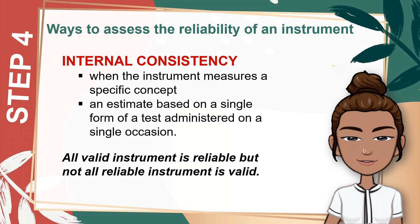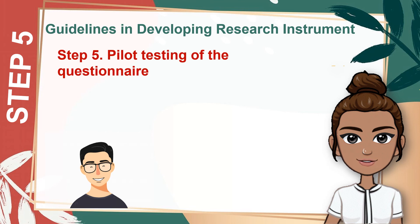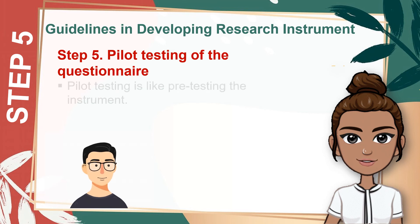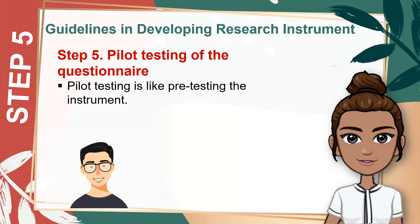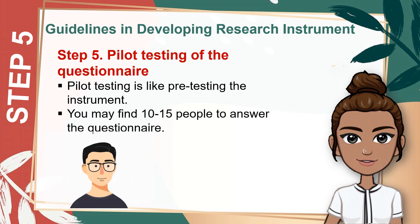To understand this: if you have flu and use a thermometer to measure your temperature, the thermometer gives a reliable result, but not always valid — because if the thermometer is not calibrated accurately, the result might be two degrees lower than its true value. Step 5: Pilot testing of the questionnaire. Once you have assessed the validity and reliability of the instrument, pilot test the questionnaire before distributing it to the target respondents. You may find 10 to 15 people to answer it. Participants could put remarks on some questions, which can help you enhance your questions.